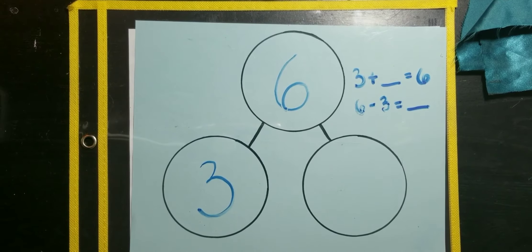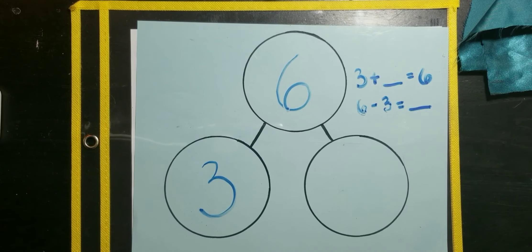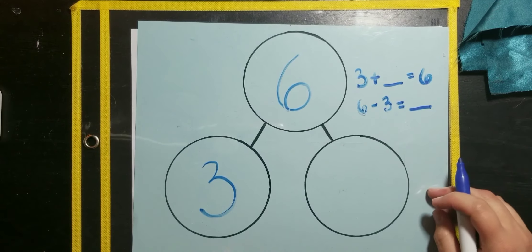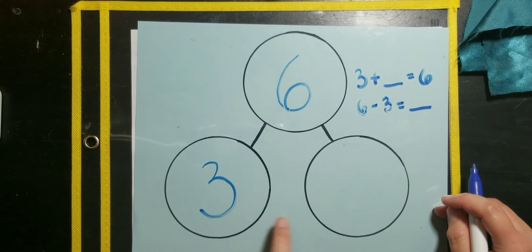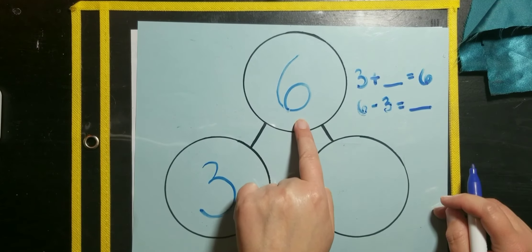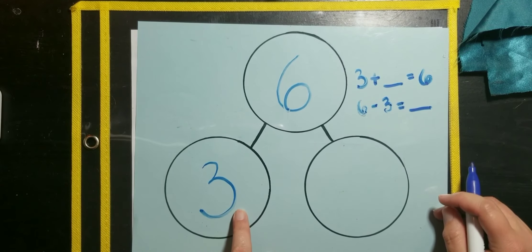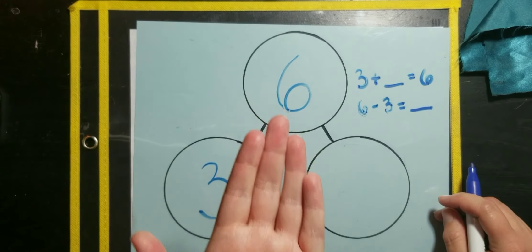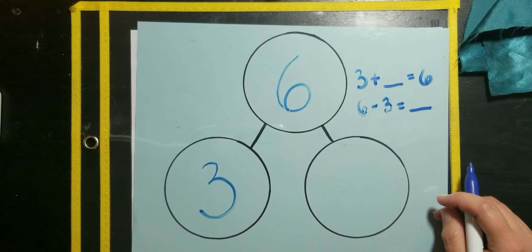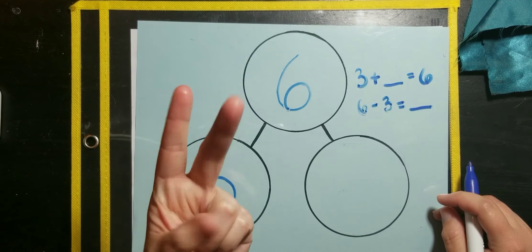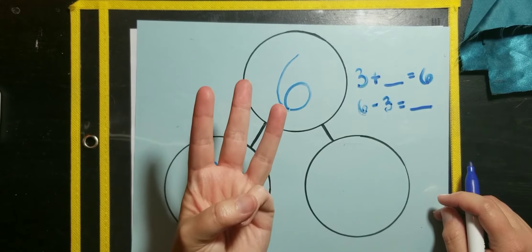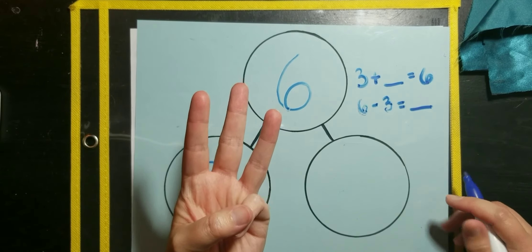Okay? So, we could use subtraction to solve this problem. Okay? We could also count on to solve this problem. So, just like we counted on in the last problem, I'm going to count on in this one. So, we're going to start with the number three. And we're going to see how many we need to count to get to six. And we're going to use our fingers to do that. So, I want you to take that number three, put it in your head. Three. Okay? Now, I'm going to keep counting on my fingers from three. Four, five, six. So, how many fingers do I have up? Three. Exactly.